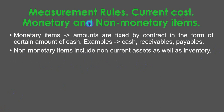What are monetary items and what are non-monetary items? Monetary items are amounts which are fixed by a contract in the form of a certain amount of cash — for example, receivables, payables, and of course cash itself. Non-monetary items include non-current assets as well as inventory.